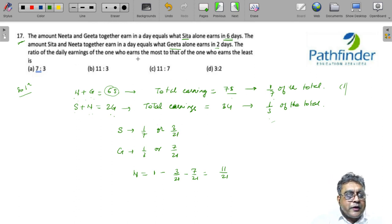Now we are given the ratio of the daily earnings of the one who earns most, so Neeta earns the most, to the one who earns the least, so Sita earns the least. You need the ratio of 11/21 to 3/21, that is 11 to 3, which is your answer.